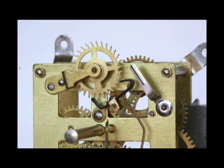The escape wheel and anchor can be located on the front, rear, or in between the plates of the movement.